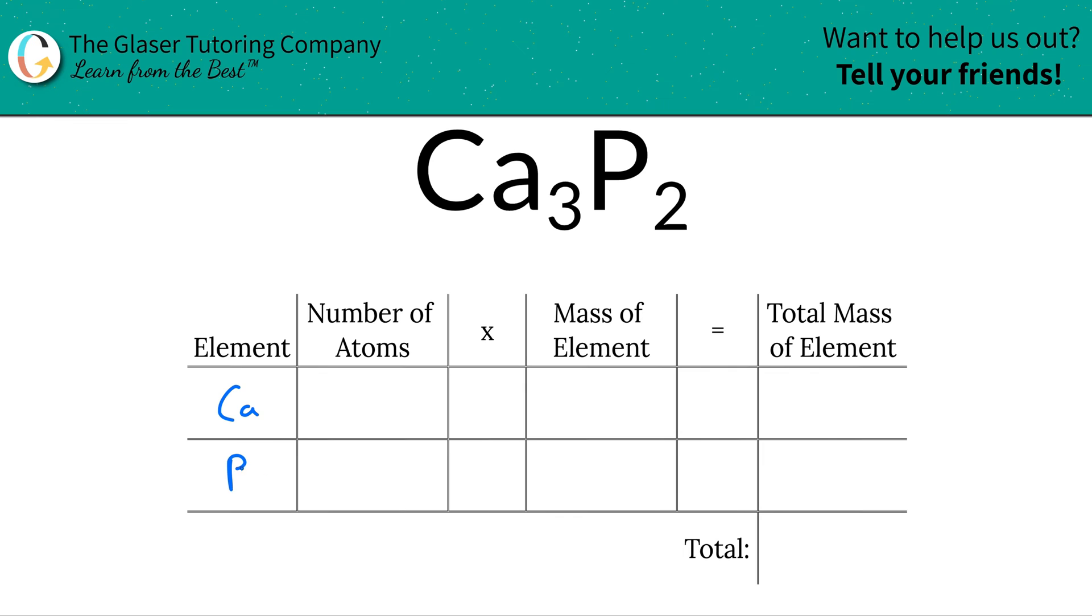So, I have calcium in calcium phosphide and phosphorus. Next is to identify the number of atoms. This is where the subscripts come into play. The subscript of calcium here is a three. That means we have three calcium atoms, and then we have two phosphorus.